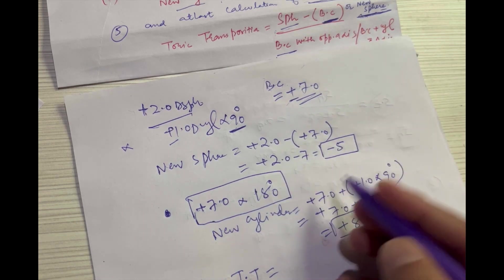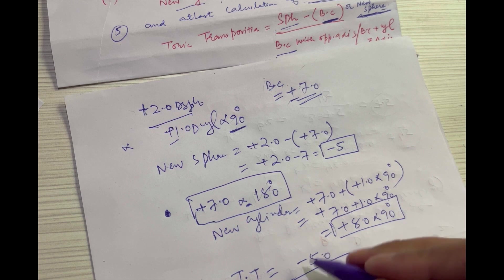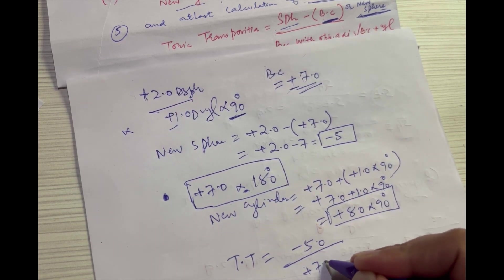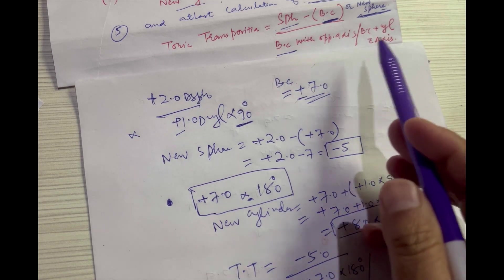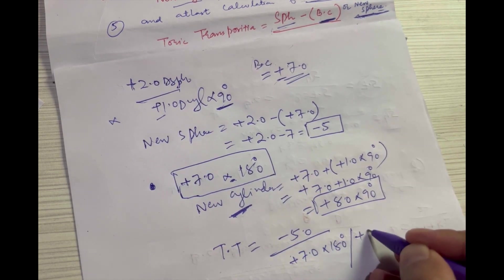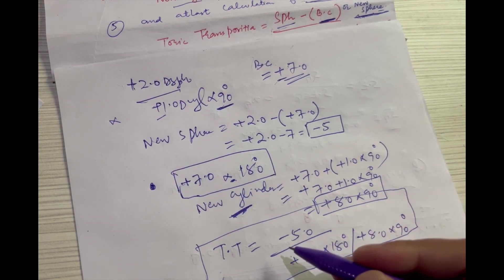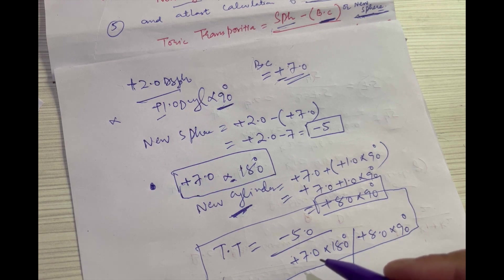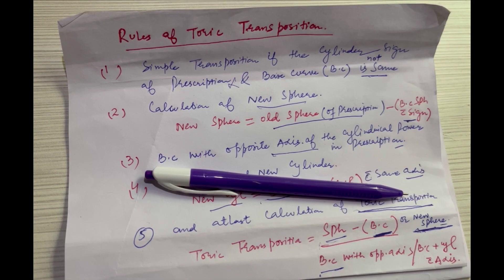The final toric transposition of this prescription is: new sphere = -5 in the numerator; in the denominator, base curve with opposite axis = +7 at 180°, and new cylinder = +8 at 90°. So the final result is -5, with +7@180° and +8@90°. I hope you now have a good understanding of toric transposition. If you found this video useful, kindly like and share. Thank you.